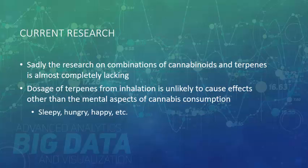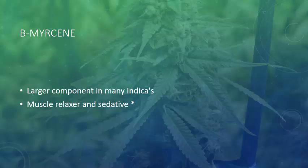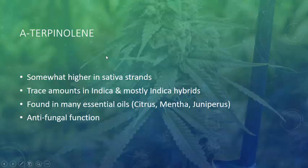I've chosen a few terpenes to highlight. Beta-myrcene is a large component of many indica strains — it is a muscle relaxer and a bit of a sedative, which is commonly attributed to the effects from using indica variety. Terpinolene is found somewhat higher in sativa strains, with trace amounts in indica and mostly indica hybrids. It's found in many essential oils — citrus, mentha, juniperus — and it has an antifungal function.